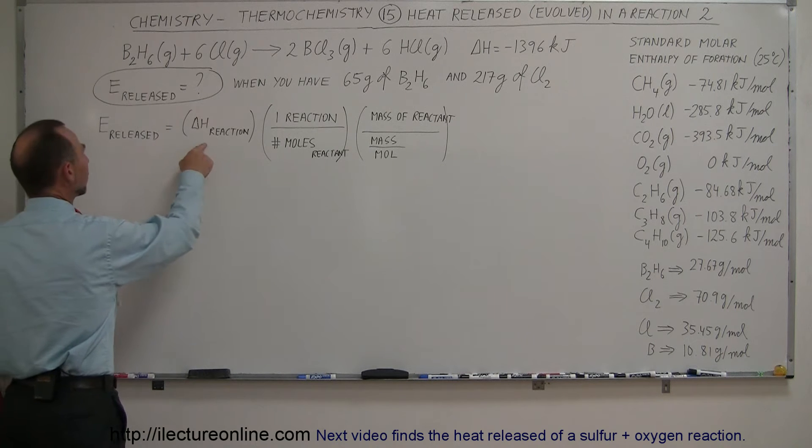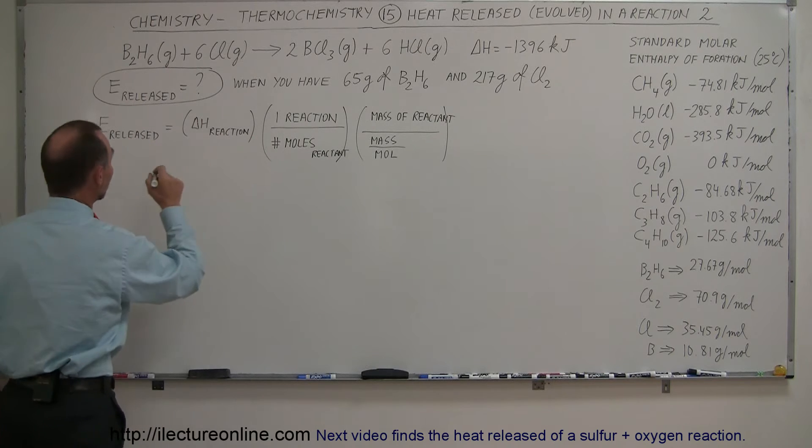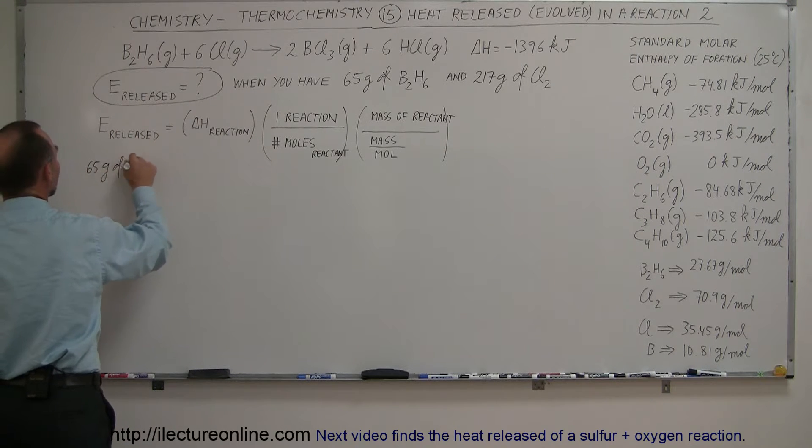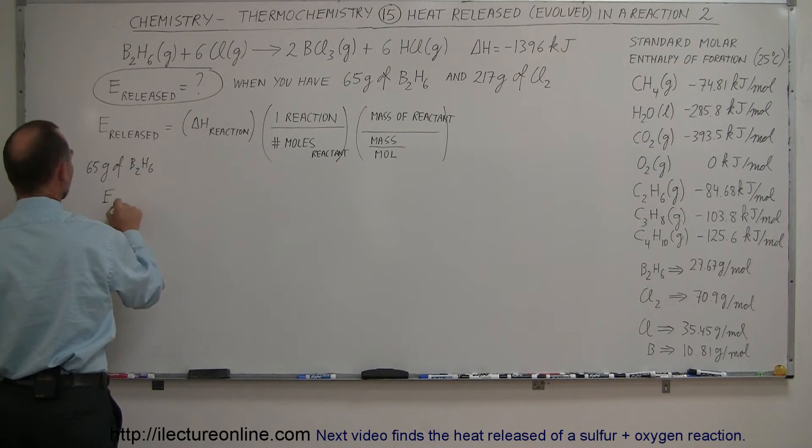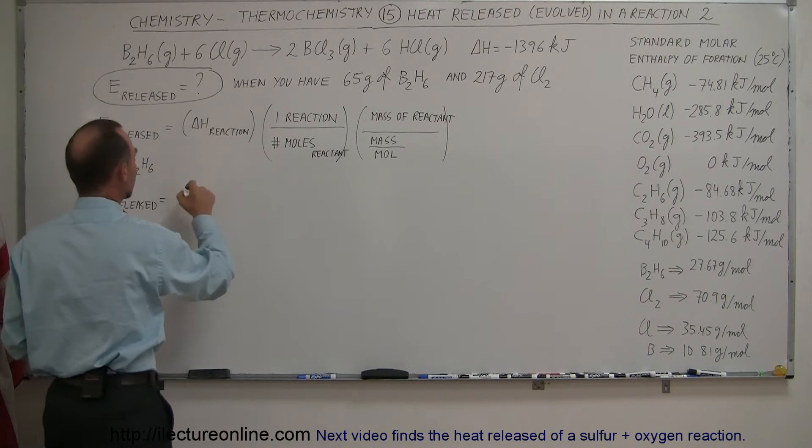To find the energy released, we're going to put in the energy of the reaction. We're going to start with 65 grams of diborane. So the energy released in the reaction equals the amount of energy here, which is 1,396 kilojoules.